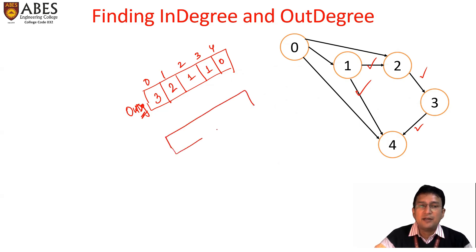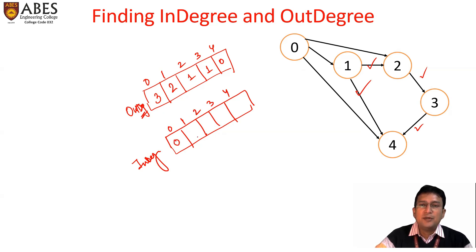Similarly, we will find a vector or array for the indegree of all vertices, with size five (indices 0 through 4). The indegree of vertex zero is zero (no incoming edge). For one, it is one. For two, it is two (two edges terminate there). For three, it is one. For four, it is three because there are three edges terminating at vertex four.